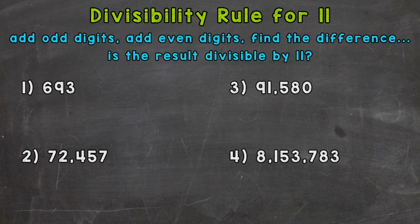Now let's go through four examples here and see if they are divisible by 11 based on the rule at the top of the screen. So we're going to add the odd digits, add the even digits, and then find the difference. If that difference is divisible by 11, then the original number is divisible by 11.